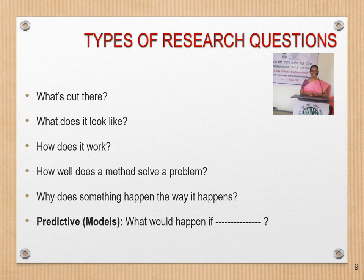The types of research questions make research meaningful: What's out there? What does it look like? How does it work? How well does a method solve a problem? Why does something happen the way it happens? And there are also predictive models asking, 'What would happen if?' So, as Rudyard Kipling said, using What, Why, When, How, Where, and Who can be applied in a business situation to make research more useful and meaningful.